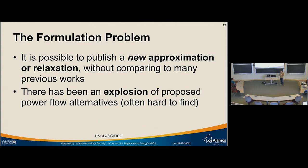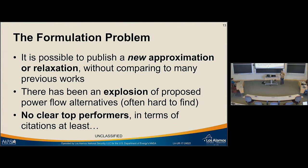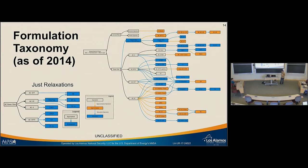This has resulted in an explosion of proposed alternatives for solving the power problem, and a lot of them are really hard to find—buried in the literature. Based on what I know, there's no clear top performer; if you look at citations of all these formulations, they're all about the same. I built a taxonomy of different power flow formulations in the literature. There's a subset which are just relaxations, but overall there are all the different variants proposed just in 2014—and there have been more since. You could imagine: which one should I use? You're not going to implement every single one and test them.